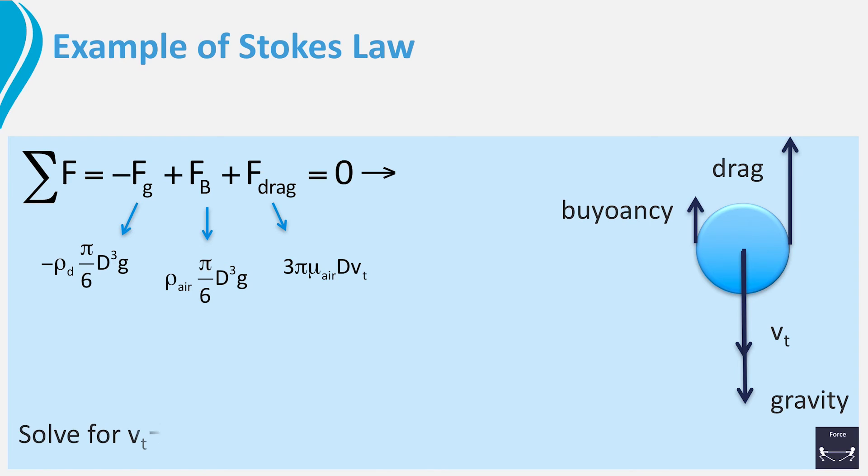Next, we solve the terminal velocity from this equation and put in numbers. We find a terminal velocity for our fog droplet of 3.3 mm per second.